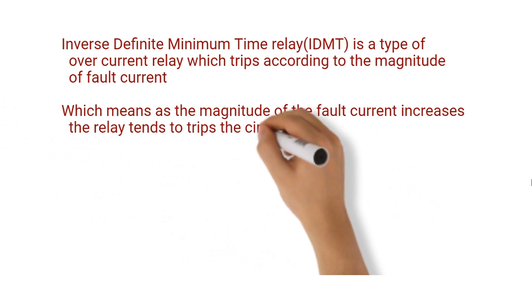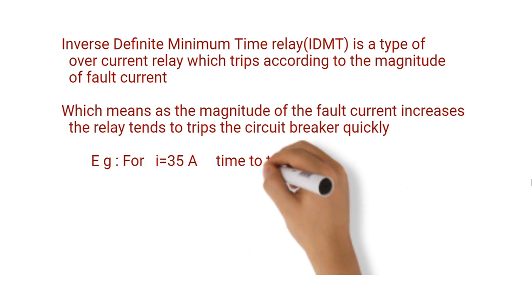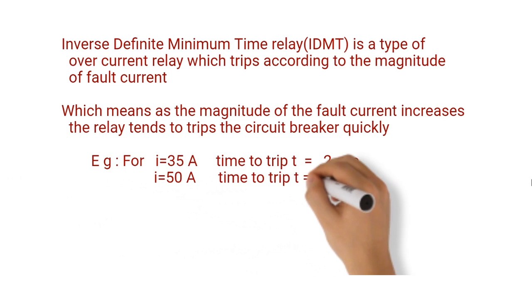Which means as the magnitude of the fault current increases, the relay tends to trip the circuit breaker quickly. For example, if I = 35 amperes, time to trip is 2 seconds. When the current is increased to 50 amperes, the time taken to trip the circuit breaker is decreased to 0.5 seconds.